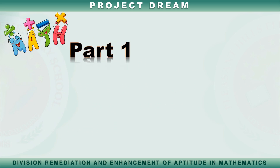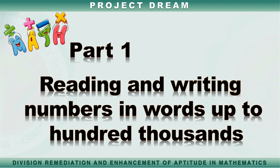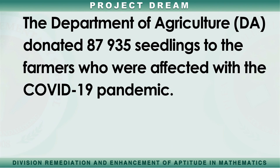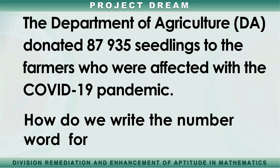Let us discuss first reading and writing numbers in words up to 100,000. Let's do this example. The Department of Agriculture donated 87,935 seedlings to the farmers who were affected with the COVID-19 pandemic. How do we write the number word for 87,935?